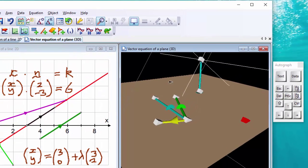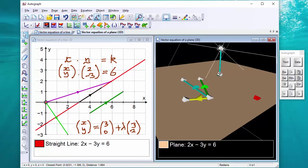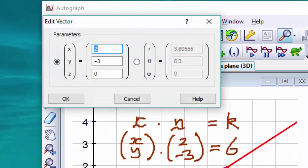And the r dot n equals constant version is just the same. Here is the origin. The vector I've created down here is two, minus three, zero. Just check that that is indeed the case. Two, minus three, zero it is.